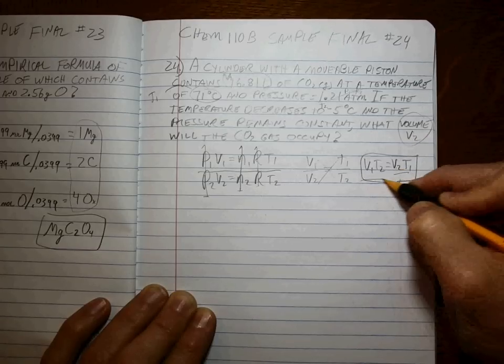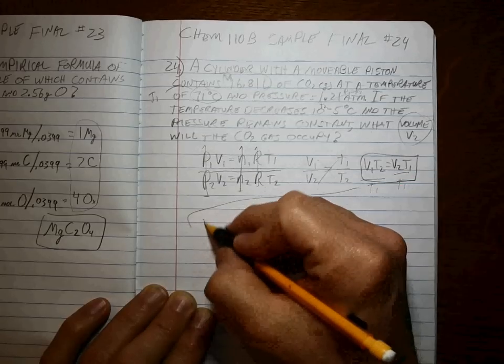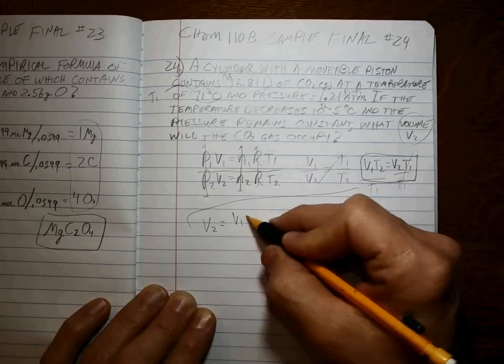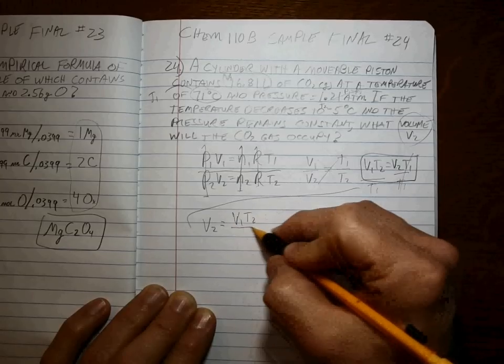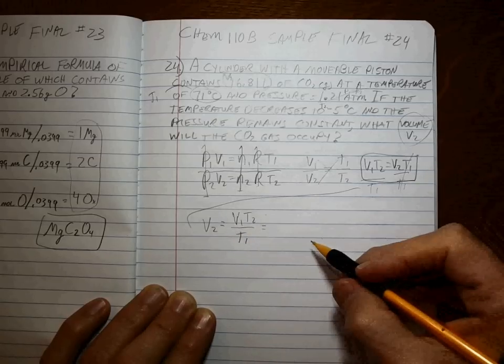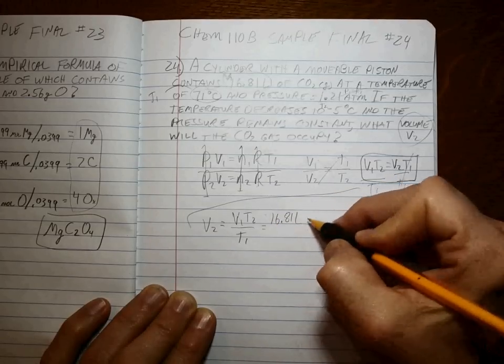Divide both sides by T1. V2 is equal to V1 T2 over T1. What's volume 1? 16.81 liters.